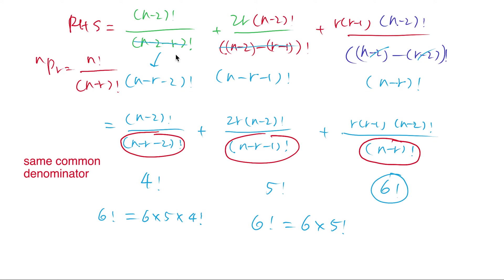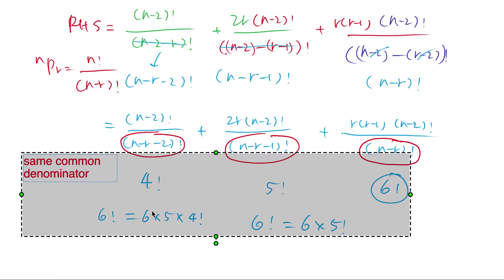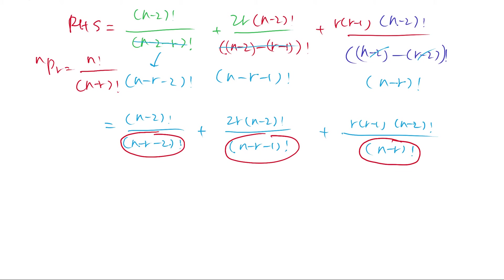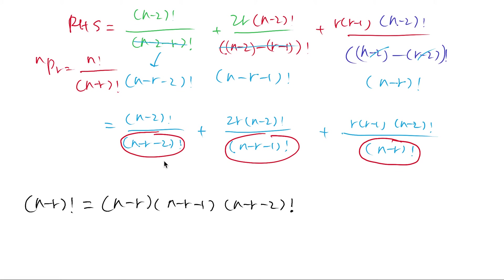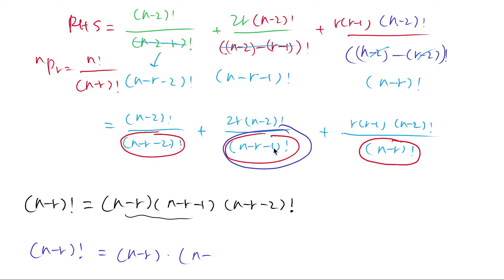Similarly, (n-r) factorial includes the previous two terms. If we start with (n-r) factorial, we can express it by decreasing by 2: (n-r) multiplied by (n-r-1) multiplied by (n-r-2) factorial. And we can also write (n-r) factorial as (n-r) multiplied by (n-r-1) factorial.